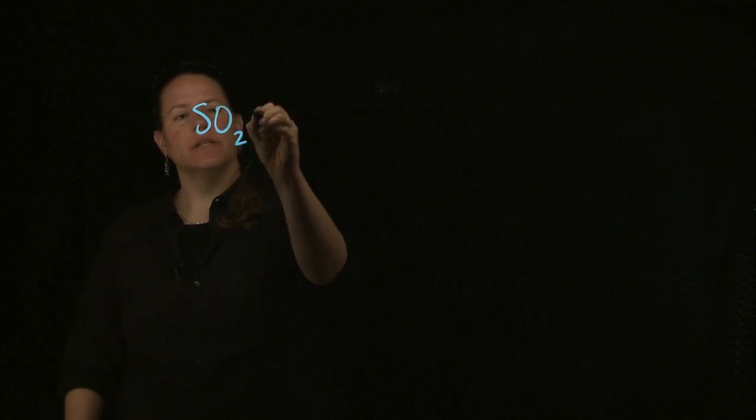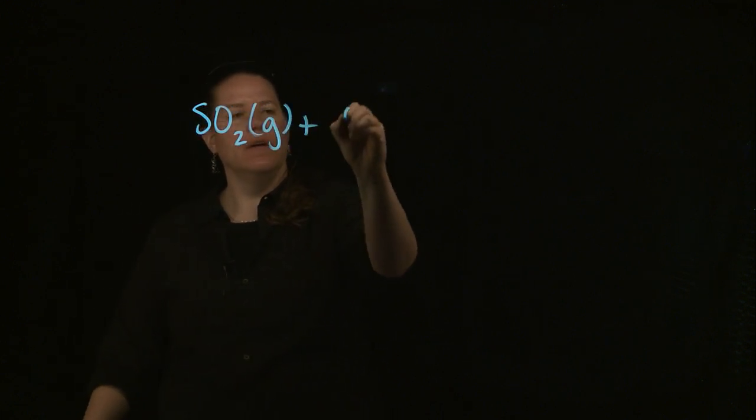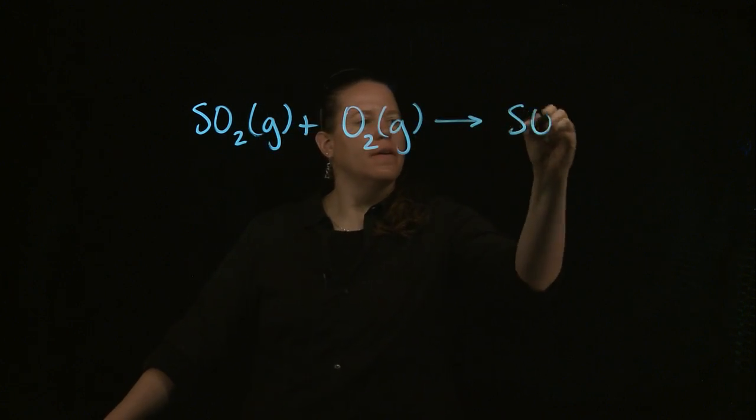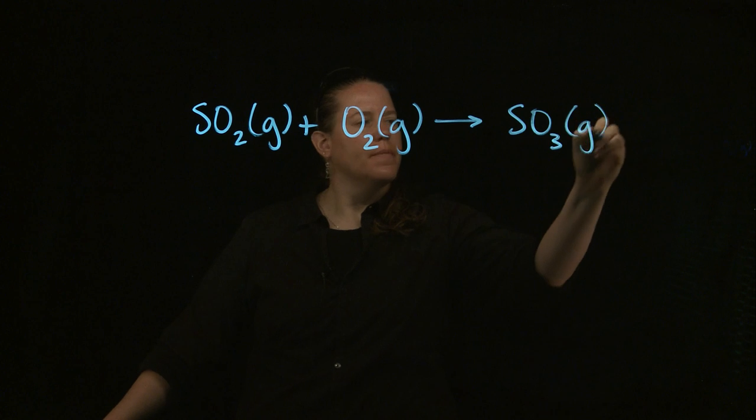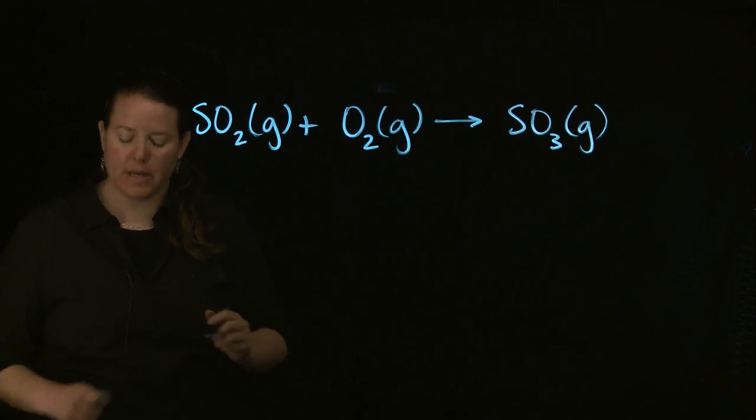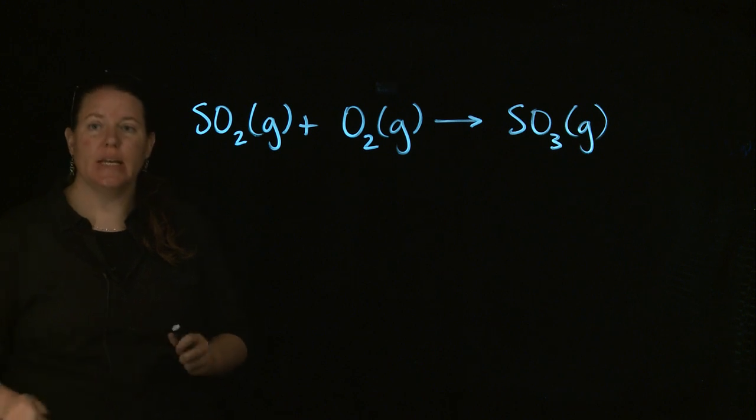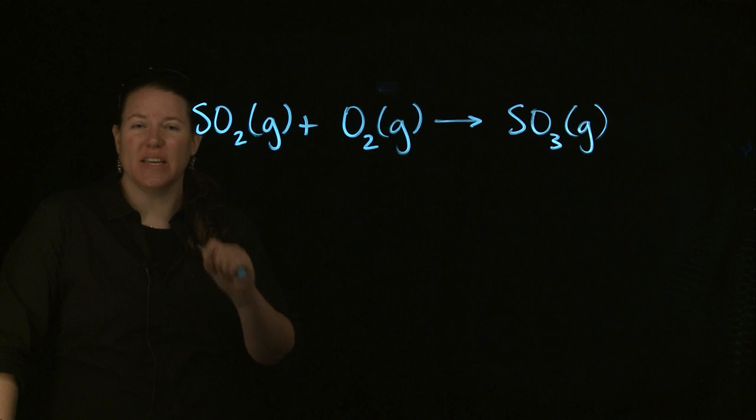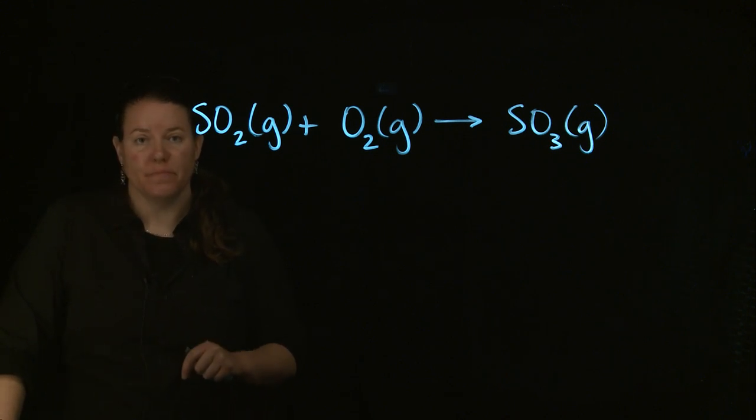So let's take a reaction that is unbalanced. Let's take this reaction and just look at it for a minute. What balancing a reaction means is that you need the same number of atoms of each element on either side of the arrow. That's what it means.